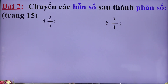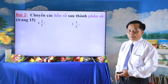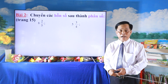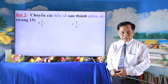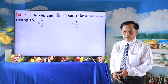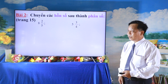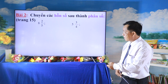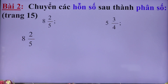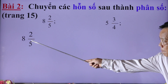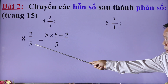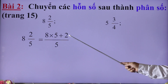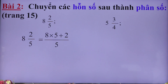Các em làm trong vòng 1 phút. Kết quả: 8 và 2/5, ta chuyển thành phân số bằng cách lấy 8 nhân với mẫu số là 5, cộng với tử số là 2, ghi ở tử số. Còn mẫu số ta giữ nguyên. Kết quả là 42/5.